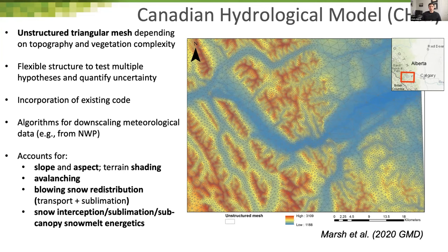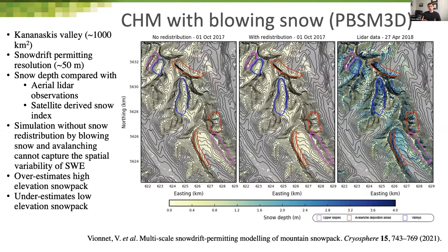CHM also brings a flexible model structure that allows ingesting additional and existing codes, enabling rigorous testing of model hypotheses, quantifying uncertainty, and model falsification. CHM is really focused to date on mountain processes: downscaling meteorology routines, accounting for slope and aspect, terrain shadowing, mass transport of blowing snow including sublimation, avalanching, and snow-forest interactions such as sublimation, sub-canopy snowmelt energetics, and interception.